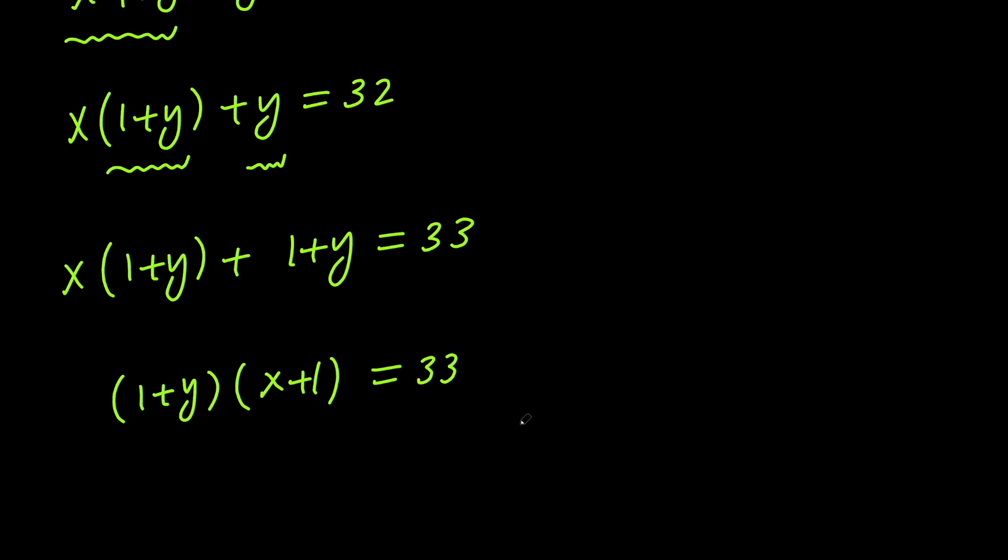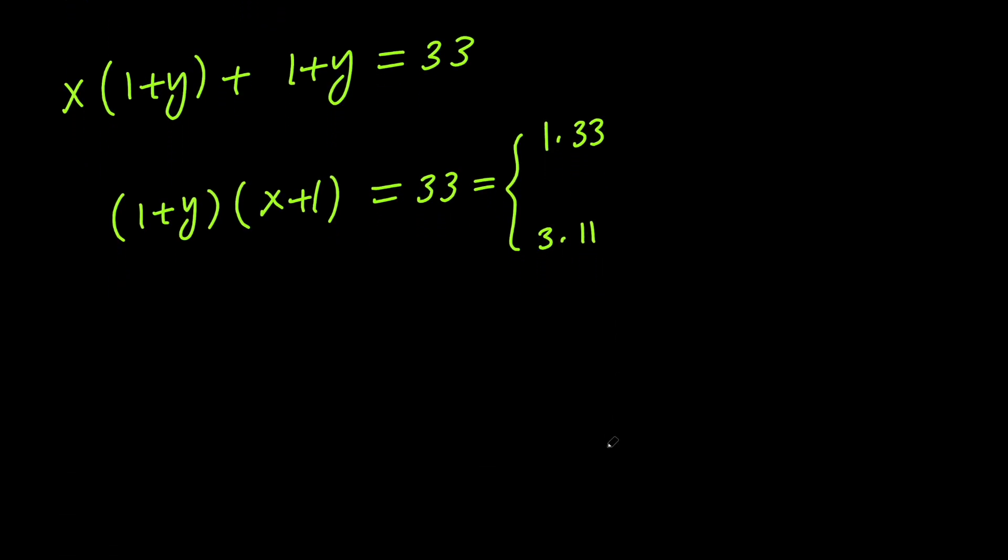Now, at this point, we factored as much as we can on the left-hand side, and now we need to do the same thing on the right-hand side. So the right-hand side is 33, and we can factor 33 in two ways, either 1 times 33 or 3 times 11. So we have two cases.